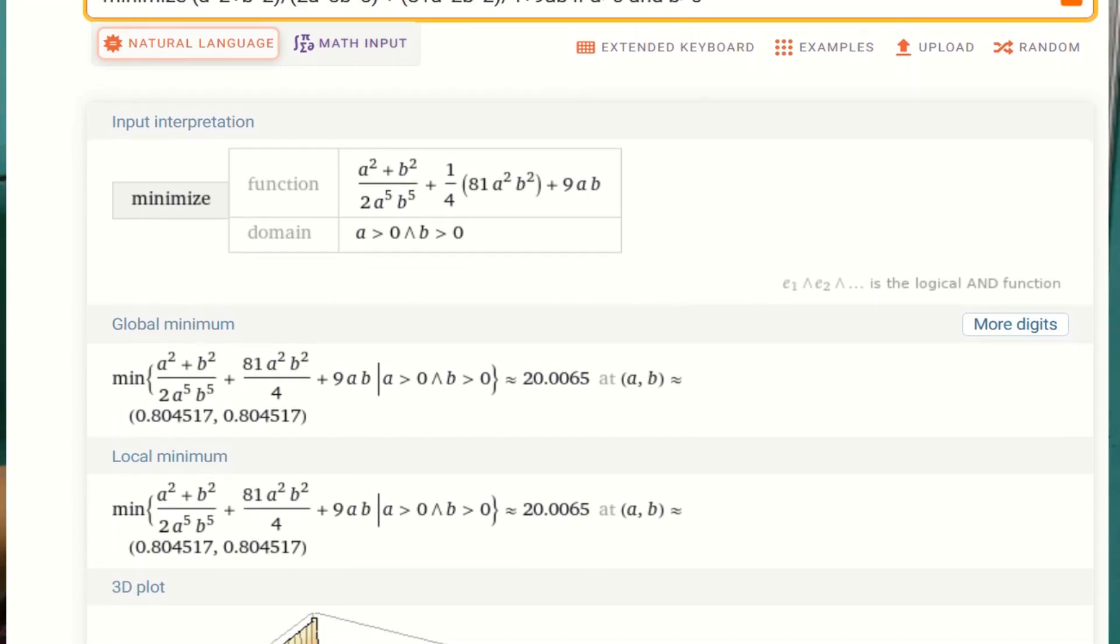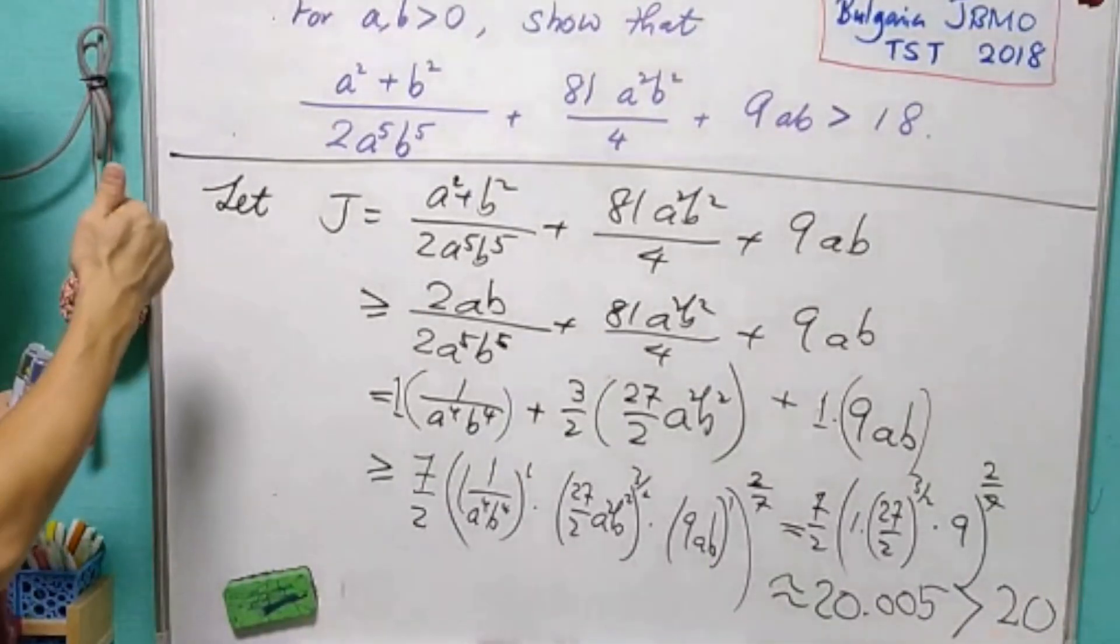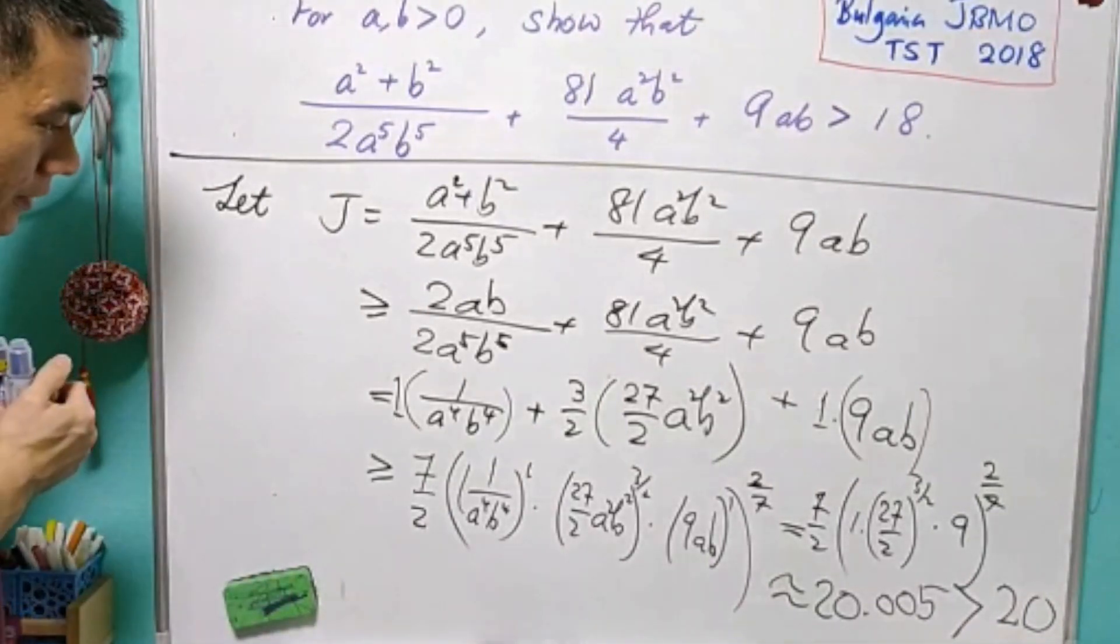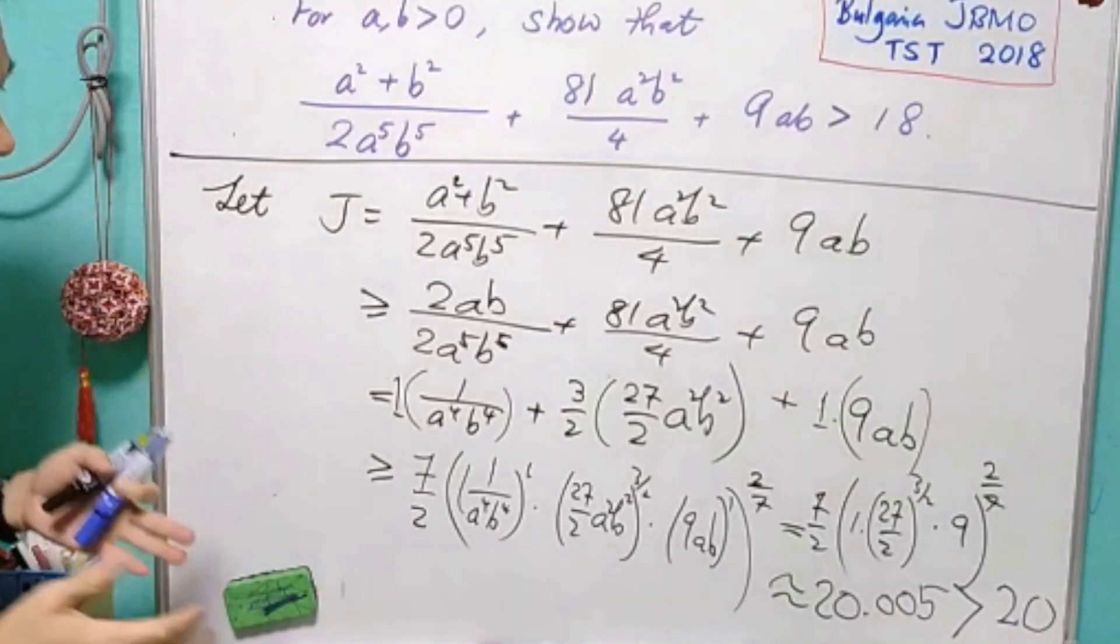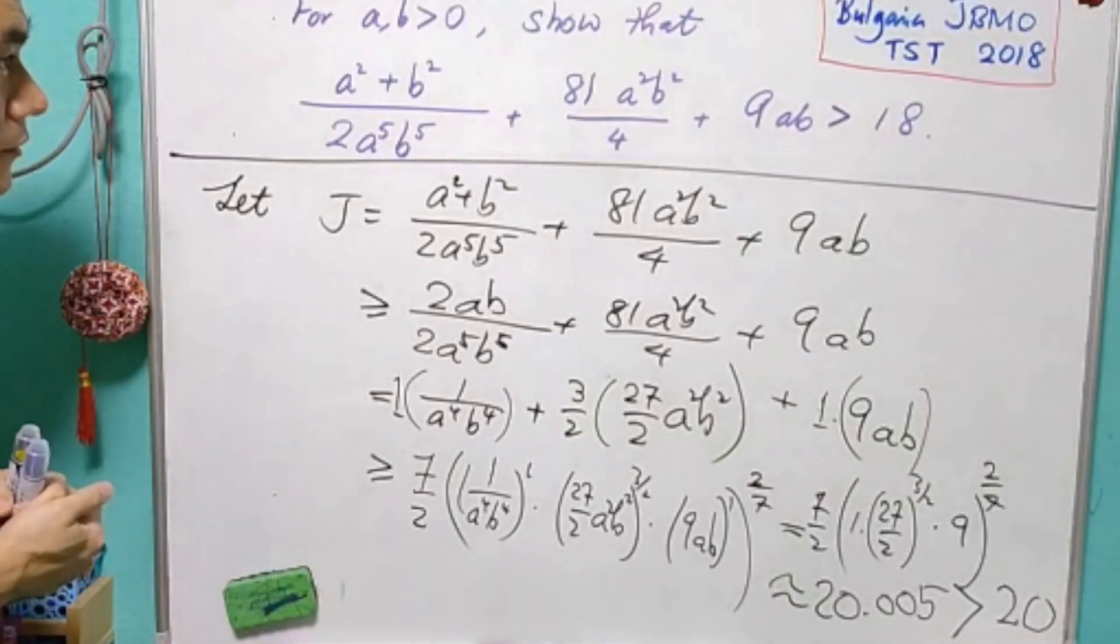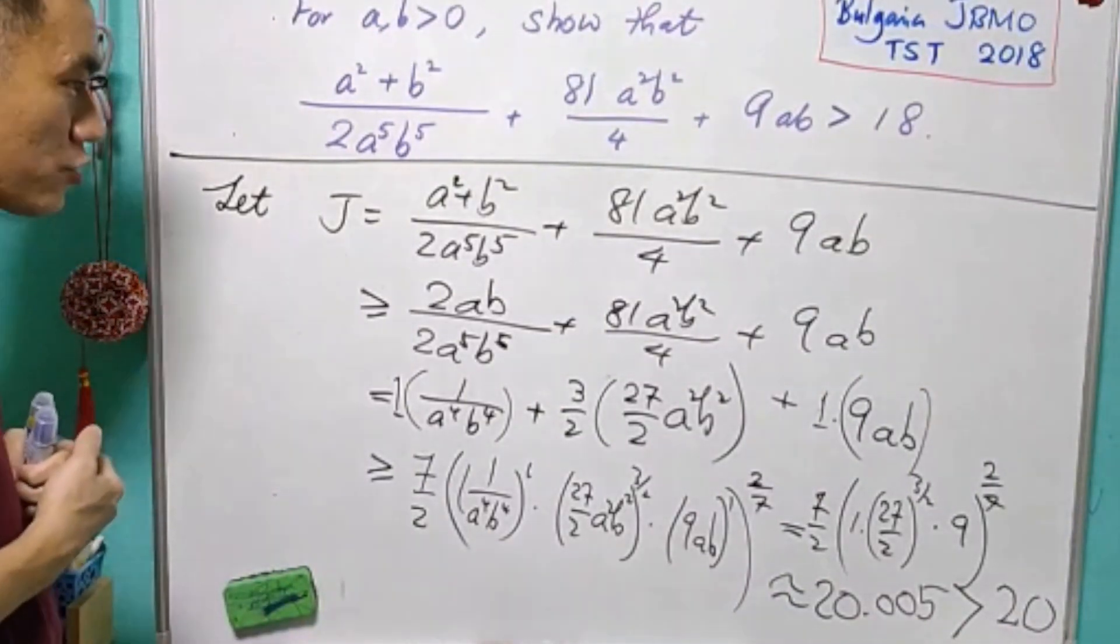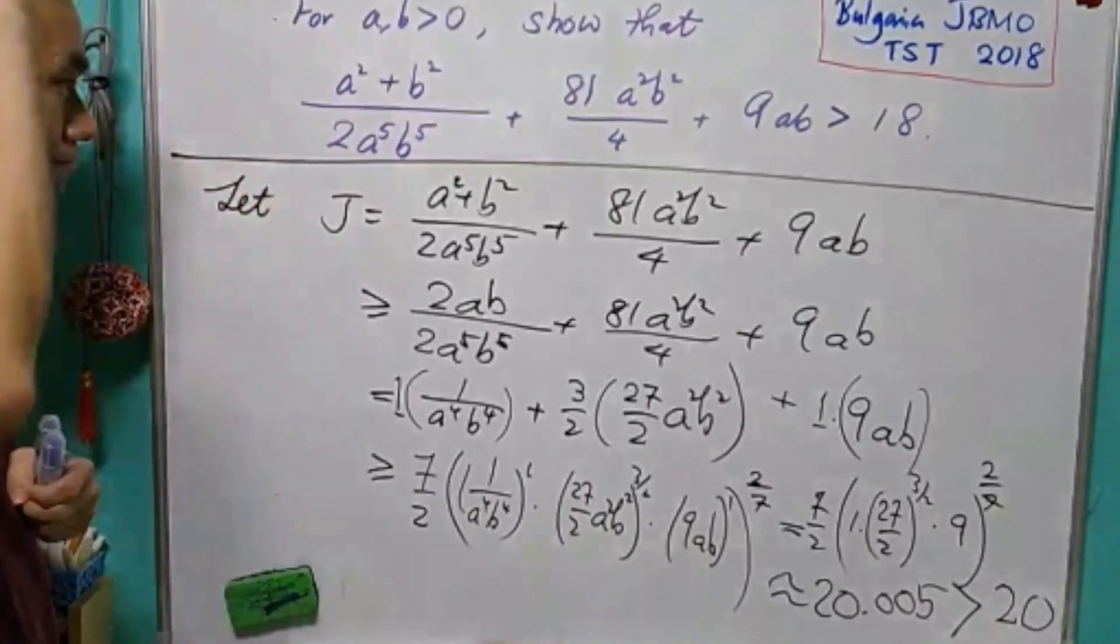So, for this short presentation, the first half, we use AM-GM inequality. And the second half, we use weighted AM-GM inequality. That's all for today's lesson. I hope you enjoyed it. I'll see you again. Bye-bye.